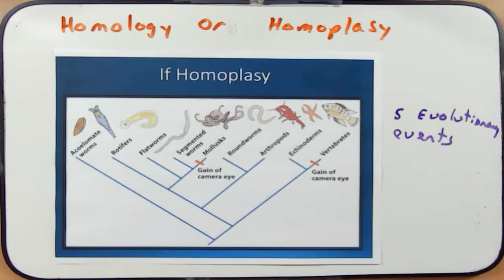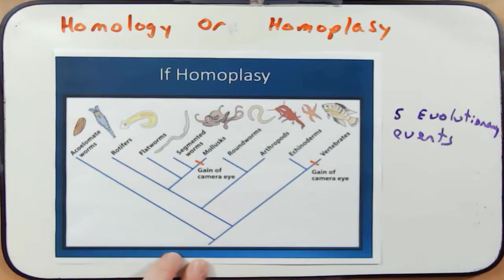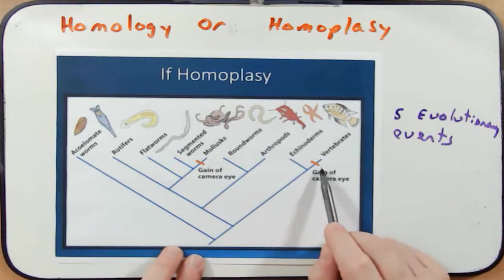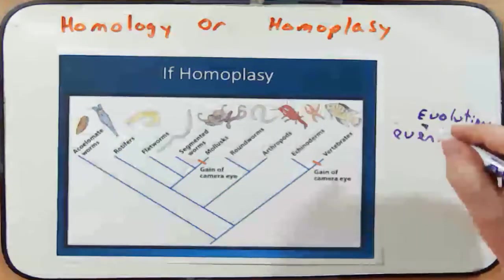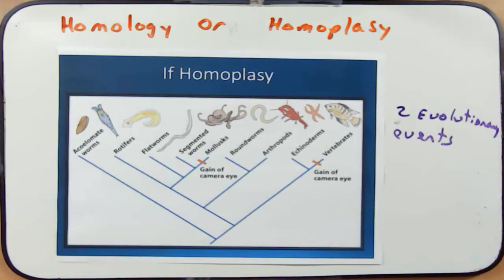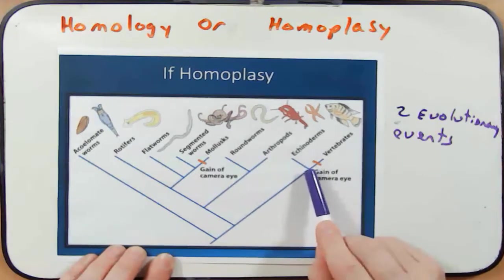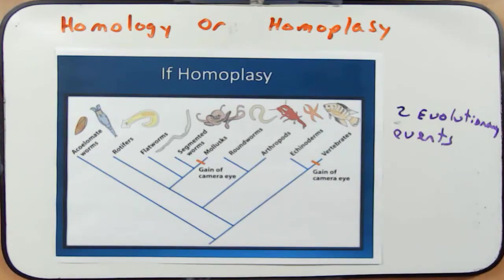If the camera eye arose by homoplasy, let's count those steps. Through homoplasy, the eye would not come from a common ancestor but would have evolved independently — once in vertebrates and once in molluscs. That requires only two independent evolutionary events, which is much more likely than five. The fossil record also supports homoplasy: we see evidence of the eye developing gradually from simple to complex in the fossil record, consistent with independent origins.